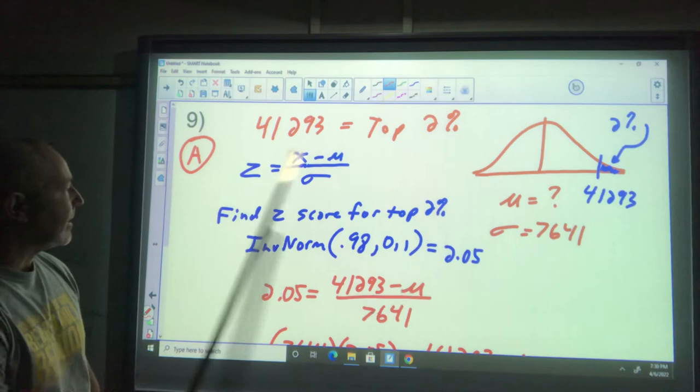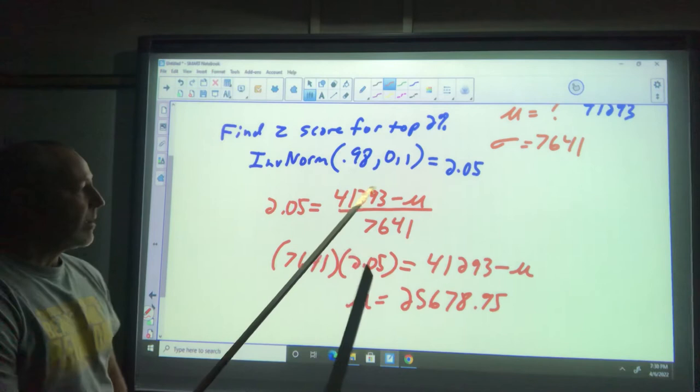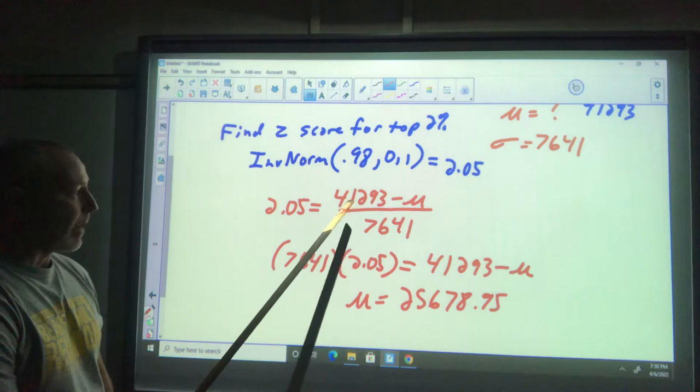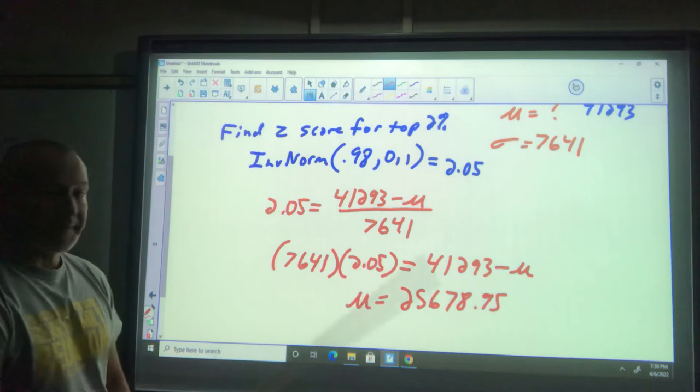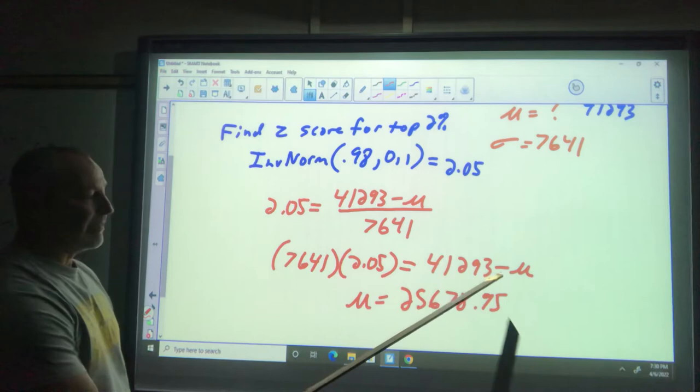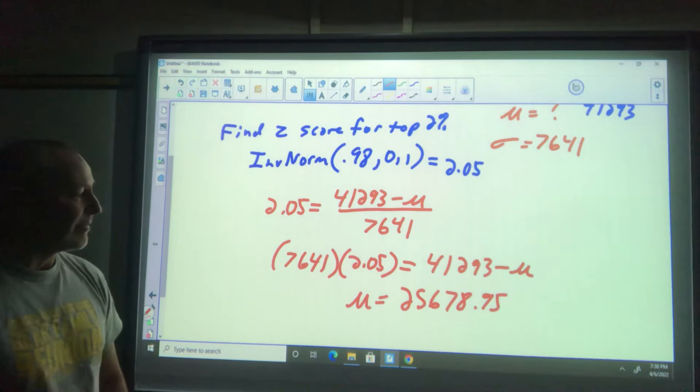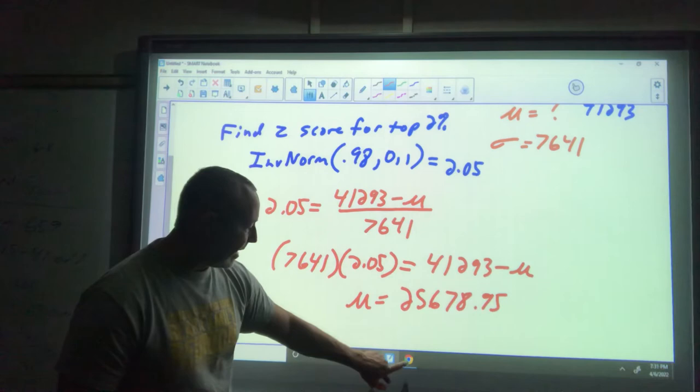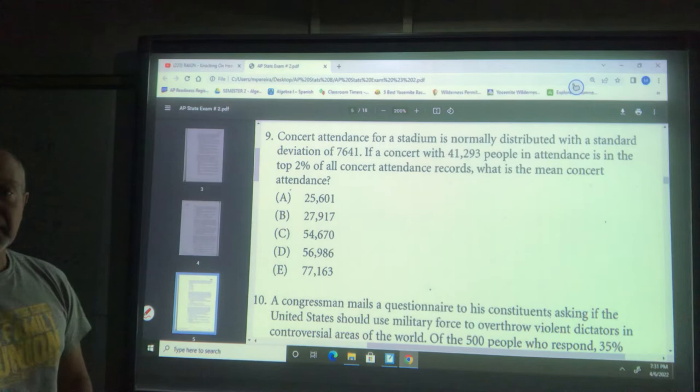2.05 equals 41,293 minus the mean (μ) over the standard deviation (7,641). Multiply by 7,641, subtract 41,293, divide by negative one. I come out with 25,678.95. If we go back here, 25,678 - A is our best choice.